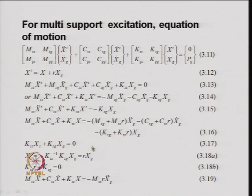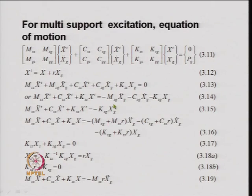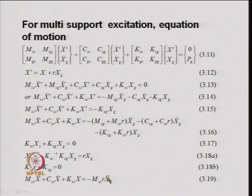The other form was in terms of relative displacement, where all quantities are relative — relative displacement, relative velocity, and relative acceleration. In this equation, we had the R matrix called the coefficient matrix, and x double dot g is the ground acceleration vector. The difference between these two equations is that one uses total displacement and the other uses relative displacement. The first requires ground displacement at each support, while the second requires ground acceleration at each support.